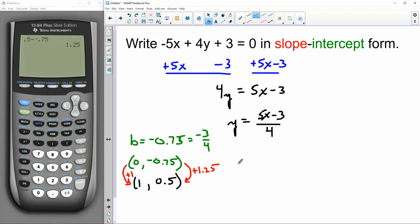Let's see. 0.5 minus negative 0.75, so that was an increase of 1.25. Well, guess what? That's m. m equals 1.25 over 1, or just 1.25. And guess what 1.25 is as a fraction? It's 5/4.